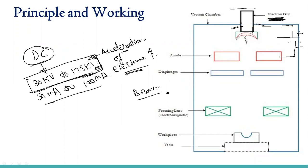The grid cap is concave in shape. Whatever electrons are coming, they come inside the grid cap, and the concave surface directs them so they move in a converging direction and eventually form a beam. After the grid cap, we use the filament, which is made of tungsten or tantalum and can withstand high temperatures above 2500 degrees centigrade. The electrons coming from the grid cap collide with this filament, and because of this collision they get a direction — they start moving vertically downward.